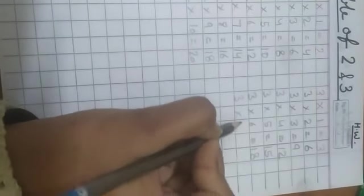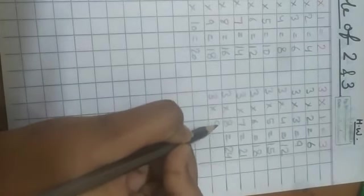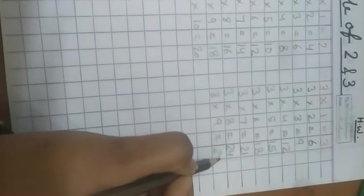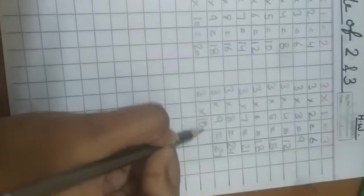3 7's are 21. 3 8's are 24. 3 9's are 27. And 3 10's are 30.